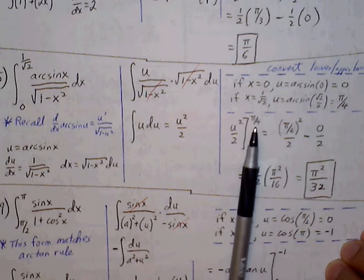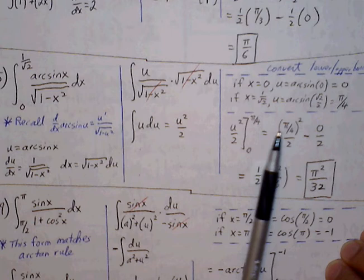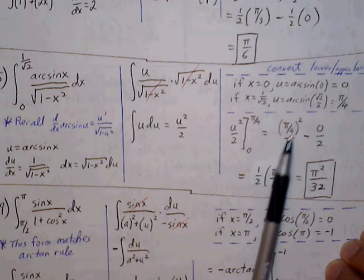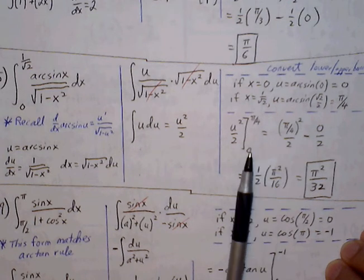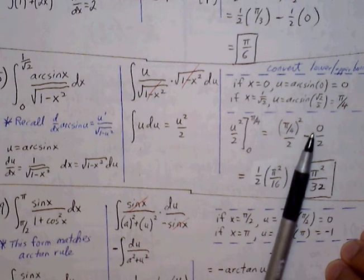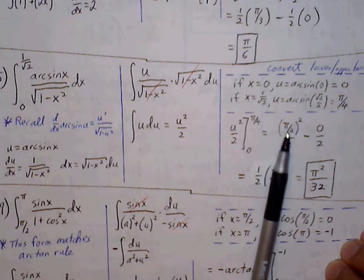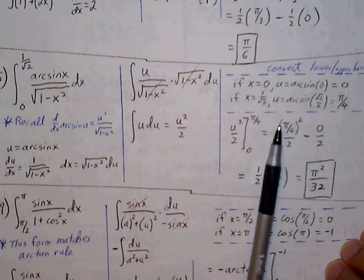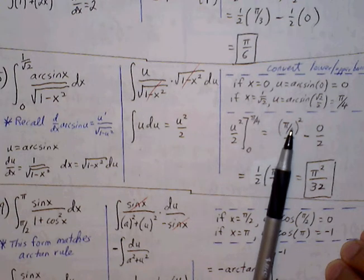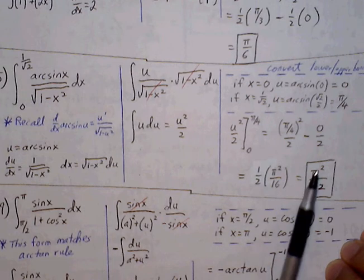The upper bound plugs in first: (π/4)² / 2, minus plugging in the lower bound 0, which gives 0/2 = 0. That washes out. We simplify by squaring: π²/16 times 1/2, which gives us π²/32.